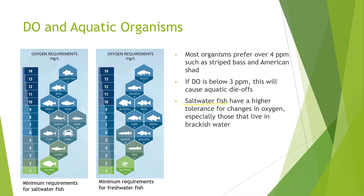Freshwater fish, by contrast, do not have a high tolerance for changes in dissolved oxygen — they are much more sensitive systems. There also aren't as many varieties of freshwater fish, which is partly because natural selection via evolution has only preserved those species able to survive in that environment and withstand any drastic changes that may occur.